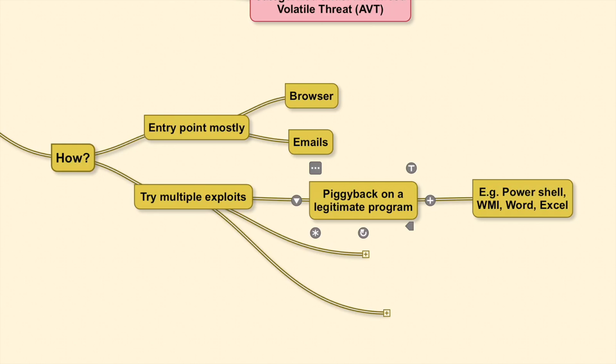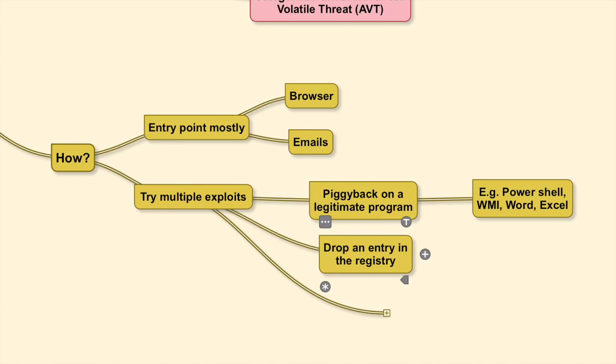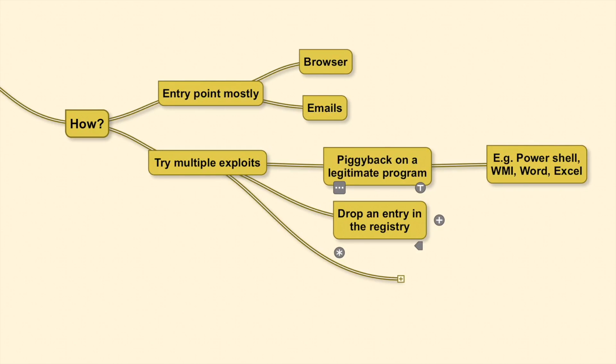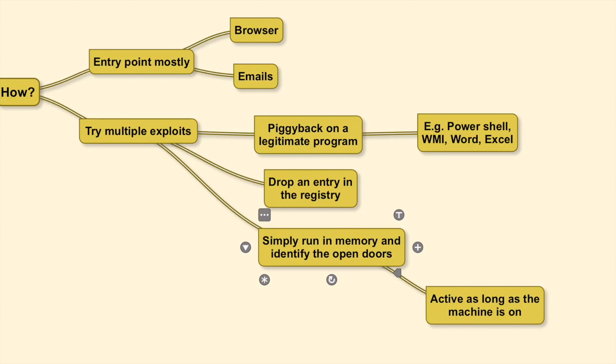It could piggyback on a legitimate program such as PowerShell or Windows Management Instrumentation, or be disguised as a macro in a Word or Excel file, and then try to gain the access available to the hooked-onto trusted program and misuse it. A fileless malware could also drop an entry in the registry to allow it to get spawned across system restarts, or it could simply remain active as long as the machine is on — lurking in the background, just waiting for the right opportunity.